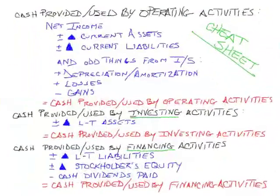We're still in the operating activities section of the statement of cash flows. Up until now, our changes — the things we've recorded — have stemmed from changes from one year to the next on the balance sheet. But now we're going to address changes to operating activities that come from the income statement.